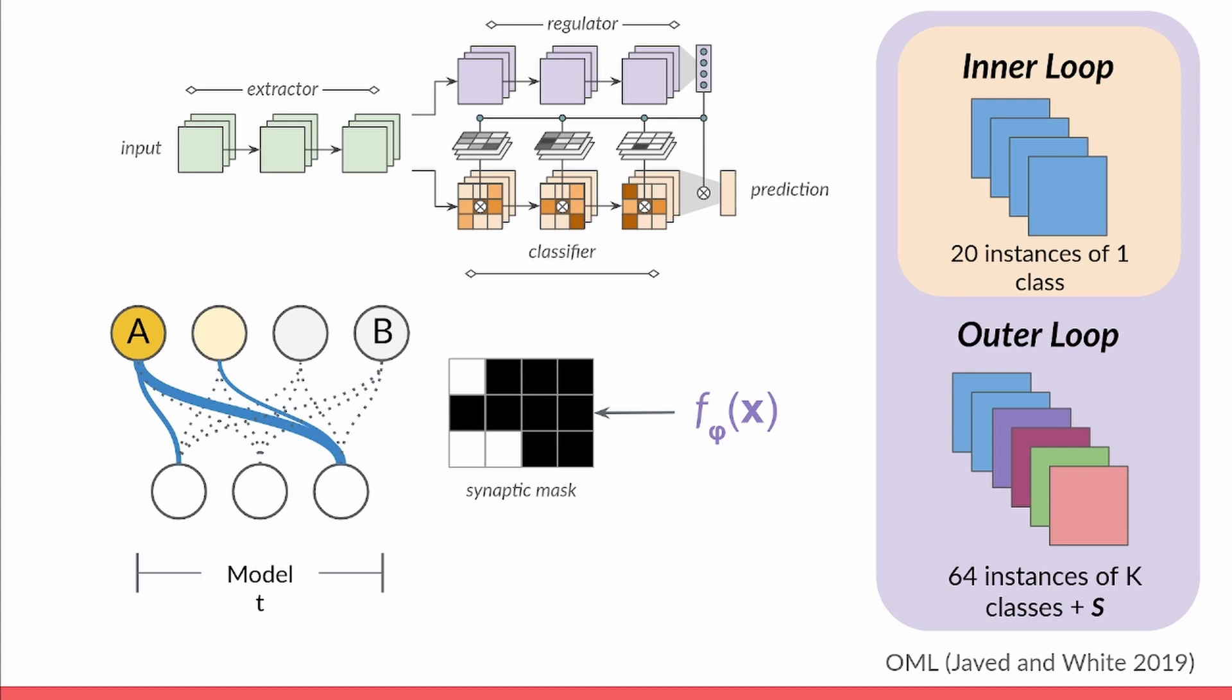To train our model, we use the Online Aware Meta Learning Algorithm, or OML, which has an inner loop of fast learning and an outer loop of slow learning. OML is configured so that the outer loop optimizes the initial weights used for the inner loop, such that inner loop learning does not interfere with outer loop predictions.